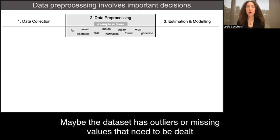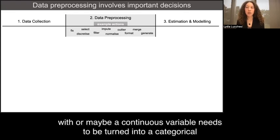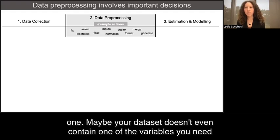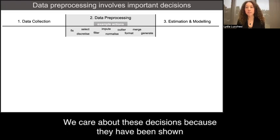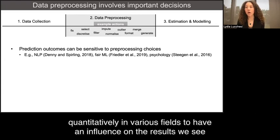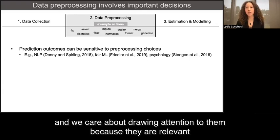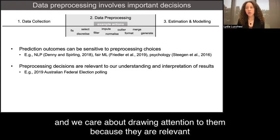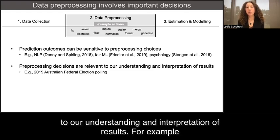Maybe the dataset has outliers or missing values that need to be dealt with, or maybe a continuous variable needs to be turned into a categorical one. Maybe your dataset doesn't even contain one of the variables you need. We care about these decisions because they have been shown quantitatively in various fields to have an influence on the results we see.